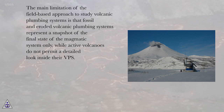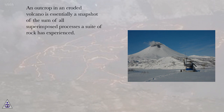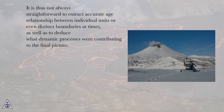The main limitation of the field-based approach to studying volcanic plumbing systems is that fossil and eroded volcanic plumbing systems represent a snapshot of the final state of the magmatic system only, while active volcanoes do not permit a detailed look inside their VPS. An outcrop in an eroded volcano is essentially a snapshot of the sum of all superimposed processes a suite of rock has experienced. It is thus not always straightforward to extract accurate age relationships between individual units or to deduce what dynamic processes contributed to the final picture.